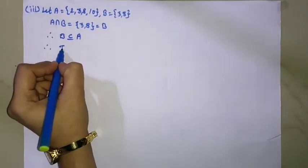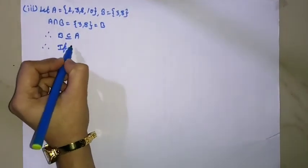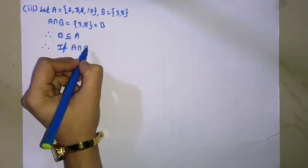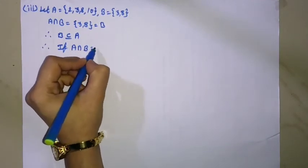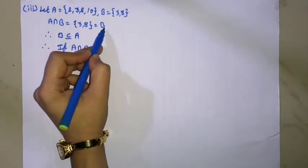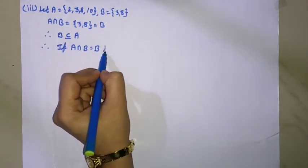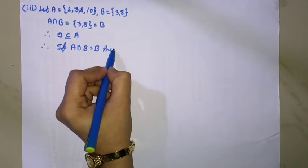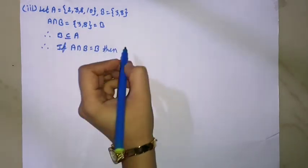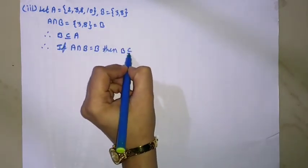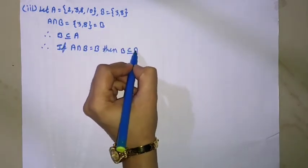Therefore, B is a subset of set A. This verifies that if A intersection B equal to B, then B is a subset of A.